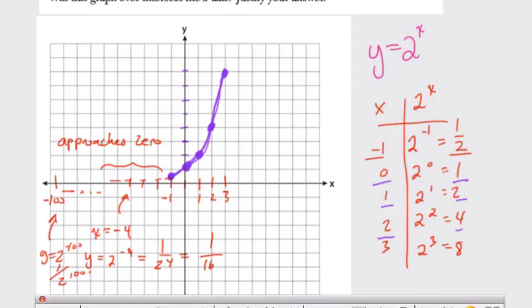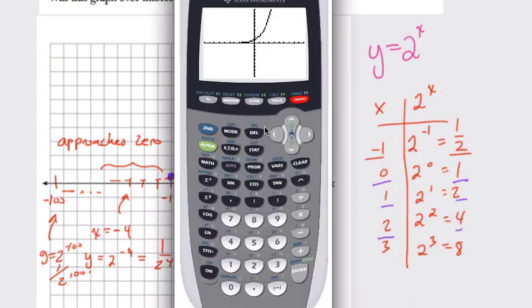If you have 1 divided by 2 to the 100th power—here, it's about 7.8 times 10 to the negative 31st. So that is 0.000... 30 times... 7, 8. A tiny, tiny decimal.